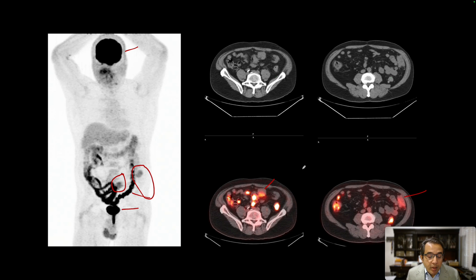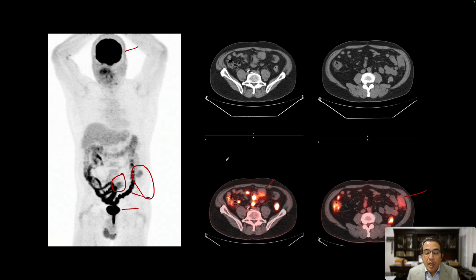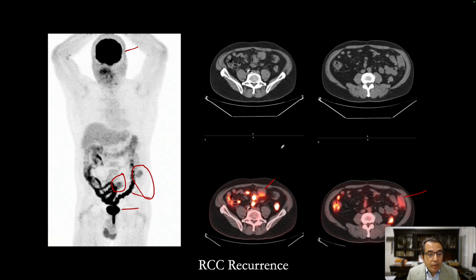FDG PET is very good for evaluating recurrence in renal cell carcinoma. The intensity of FDG uptake is not great, which is one reason FDG PET-CT is not ideal for primary diagnosis or staging of renal cell carcinoma — also because FDG is excreted from the kidneys into the urinary bladder. But once the primary has been removed, FDG PET-CT is very good for detecting recurrent and metastatic disease: soft tissue recurrence, lytic bone metastases, pancreatic metastases, and lung metastases.